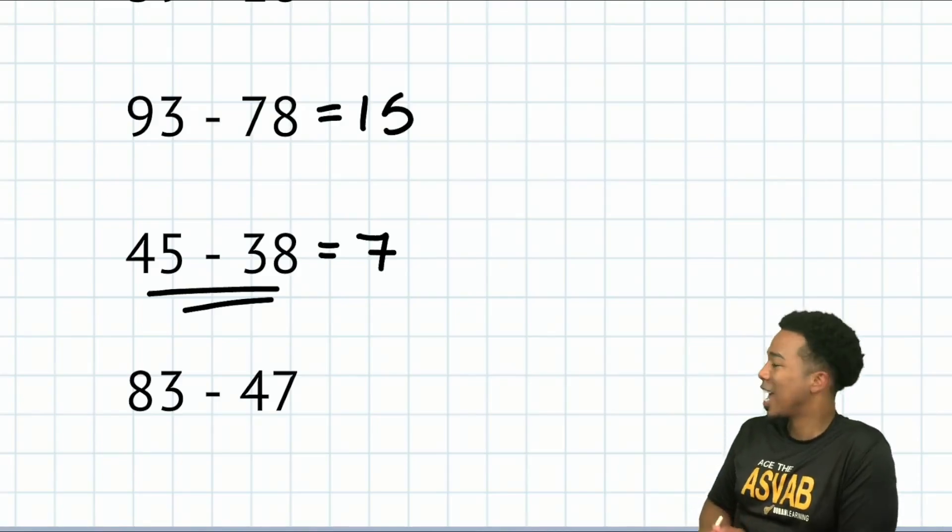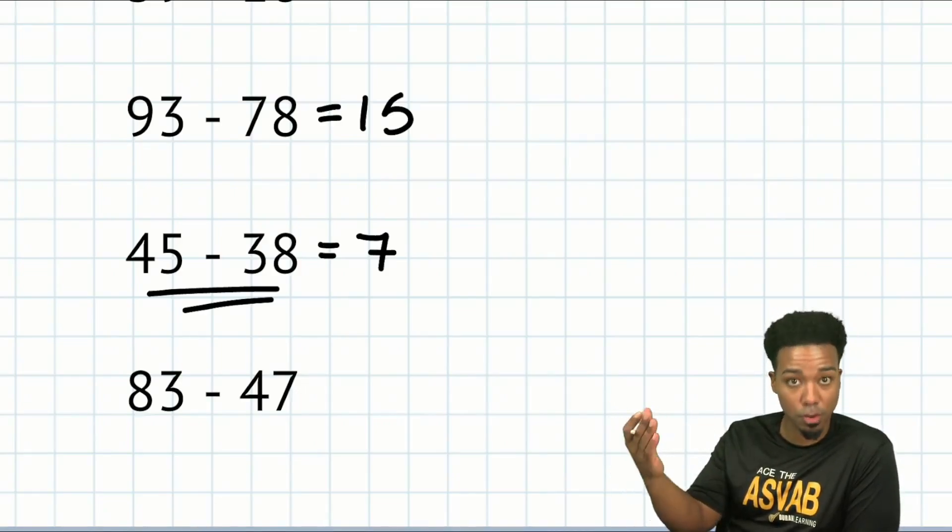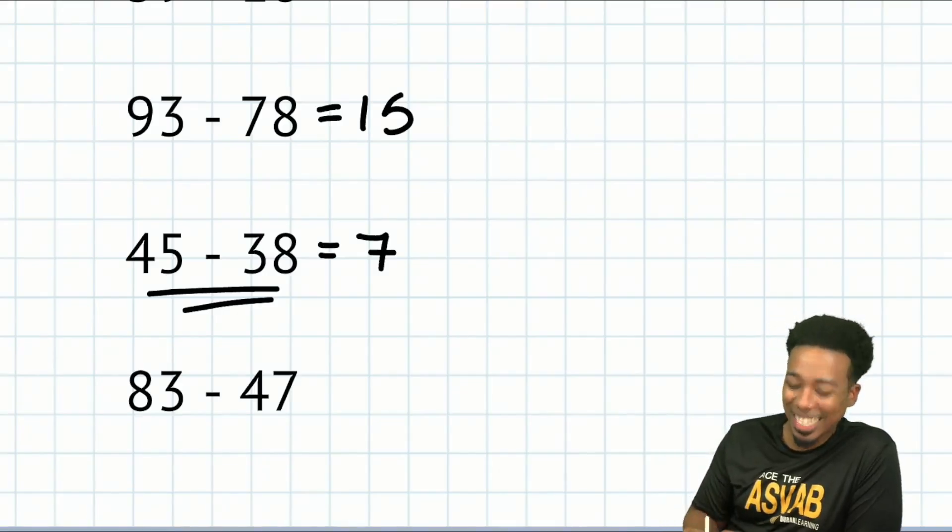For this last one, 83 minus 47, take away 50, add three back. So 83 minus 50 is 33. Add three back is 36.